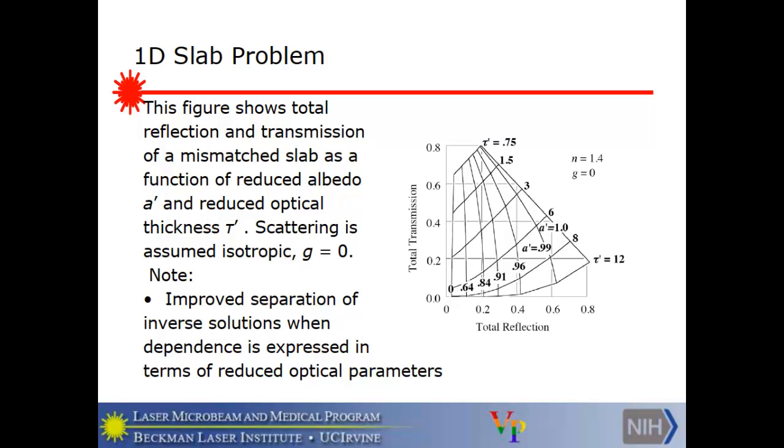And again, I refer to similarity theory can be used to facilitate the problem representation because what you do is you go from the albedo and the optical thickness and the thickness to the reduced albedo defined in this way involving G and the reduced optical thickness defined in this way. And then you get an improved picture. Again, this is a total reflection and transmission as a function of the reduced... This slab is mismatched so we have not identical refractive indices as a function of albedo, reduced albedo, and reduced optical thickness. Scattering is assumed isotropic. And what we note is the improved separation of inverse solutions when you have used these reduced optical parameters. So these ideas have geometric content and they also have algebraic content. However you like to think about them, you've probably seen them in one way or another before.